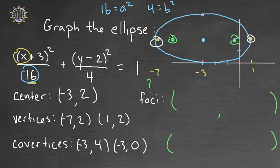One foci would be: negative 3 minus √12 comma 2, because it's got a y-coordinate of 2, and the other would be negative 3 plus √12 comma 2. So basically I went left and right c units each time.